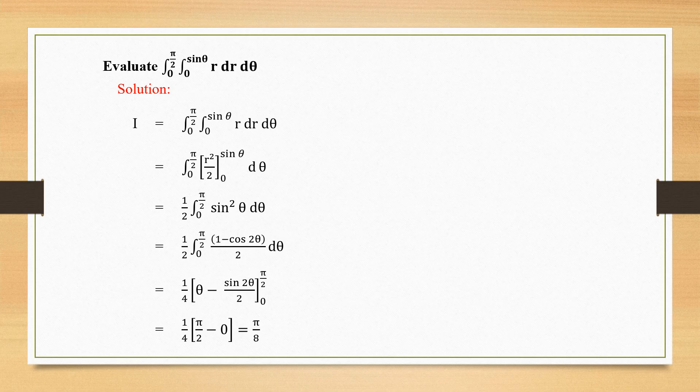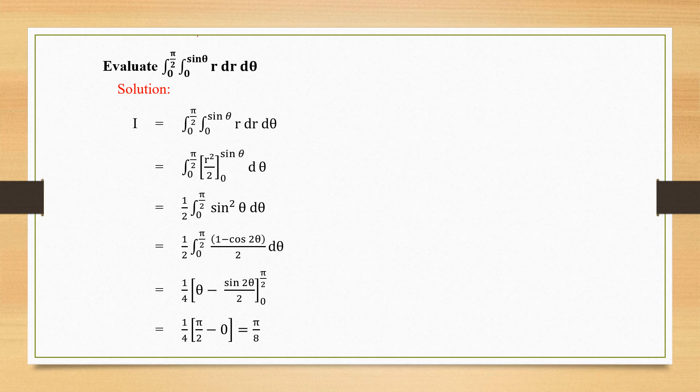Last problem: evaluate the integral over 0 to π/2, 0 to sin θ of r dr dθ. The limits are in terms of r and θ, which is called polar form. Cartesian forms are given in terms of x, y, z, whereas polar forms are given in terms of r, θ, φ, etc. The inner integral limits are 0 to sin θ. Integrating r dr gives r²/2, evaluated from 0 to sin θ, with dθ yet to be evaluated.